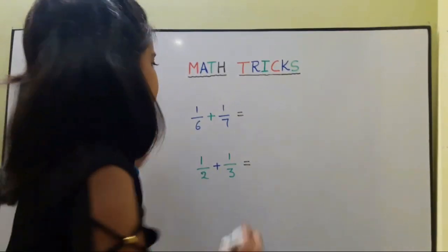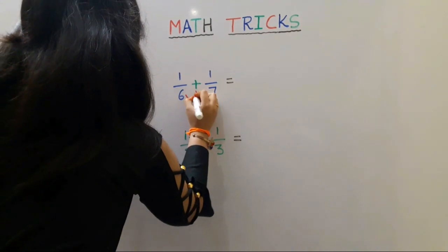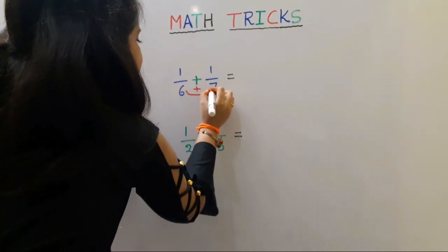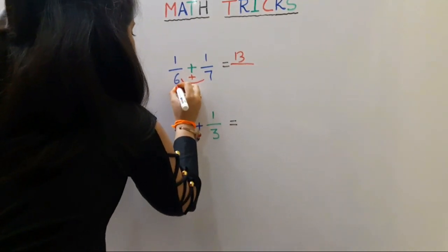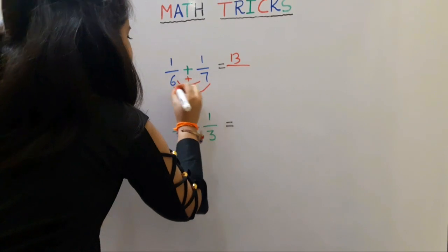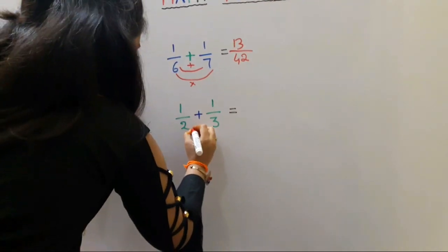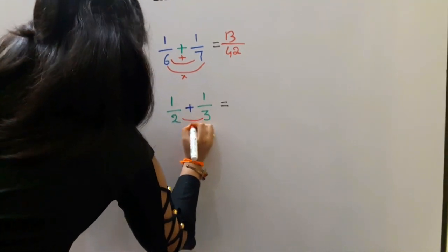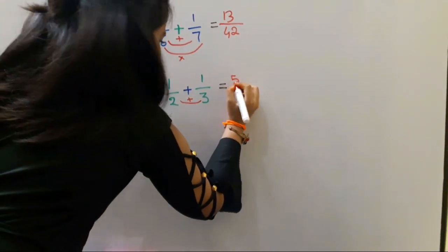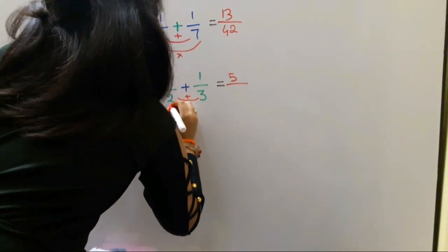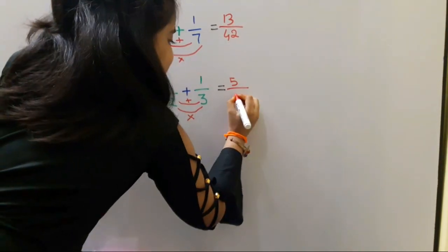Next trick in fraction. First we should add the denominators: 6 plus 7 is equal to 10. Then we should multiply the denominators: 6 7's are 42. Next one: add the denominators, 2 plus 3 is equal to 5. Then multiply the denominators: 2 3's are 6.